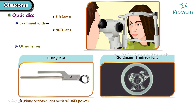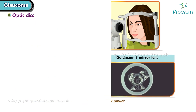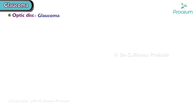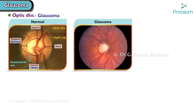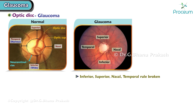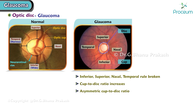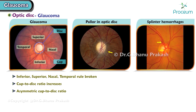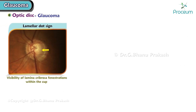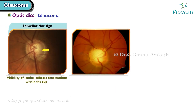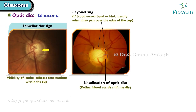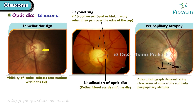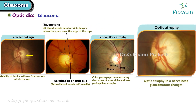The Goldman 3-mirror lens has 60 diopter power. In glaucoma, the optic disc undergoes changes such as: ISNT rule broken, increased cup-to-disc ratio, asymmetric cup-to-disc ratio, pallor, optic disc splinter hemorrhages, lamellar dot sign, bayoneting, nasalization of the optic disc, parapapillary atrophy, and optic atrophy.